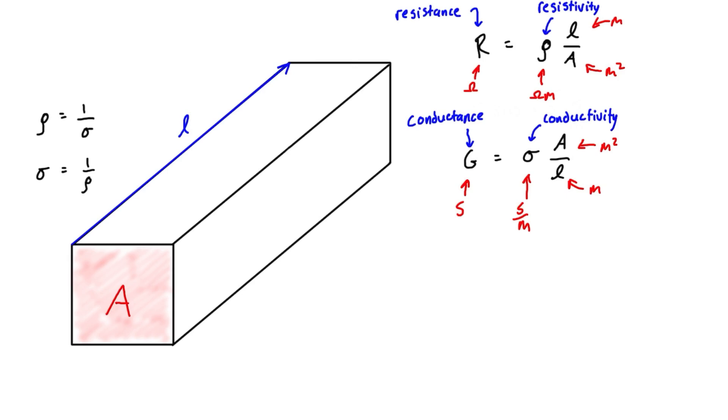This formula assumes the ideal case where current density is uniform, which isn't always the case, but for us at this level it's good enough to use.